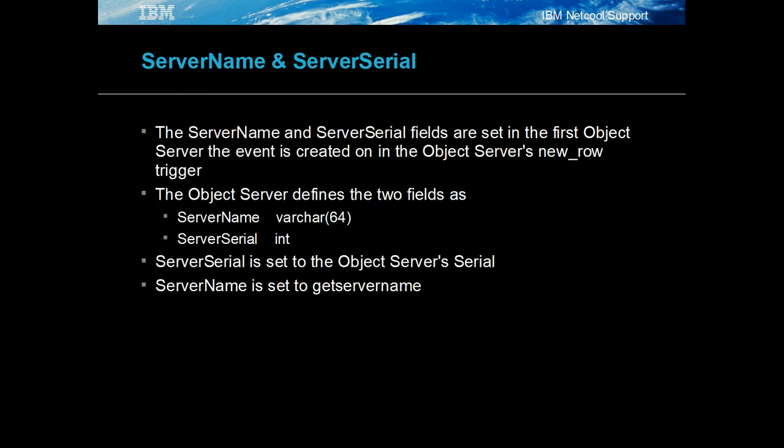Server name and server serial are set in the object server's new_row trigger to the current object server's name and serial value, provided they are not set already. Their values define the event in a multi-tier system the same way the identifier does in the object server.